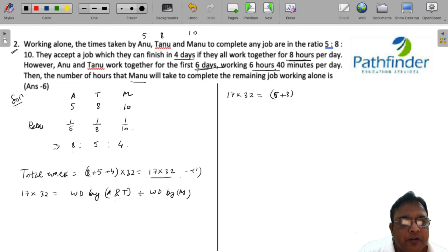So they worked for 6 days at 6 hours and 40 minutes. Now 6 hours and 40 minutes is nothing but 6 and 2 by 3 hours, which is equal to 20 by 3 hours. So I'll multiply the rates of Anu and Tanu with the days and with 20 by 3 plus the rate of Manu can be multiplied by t.